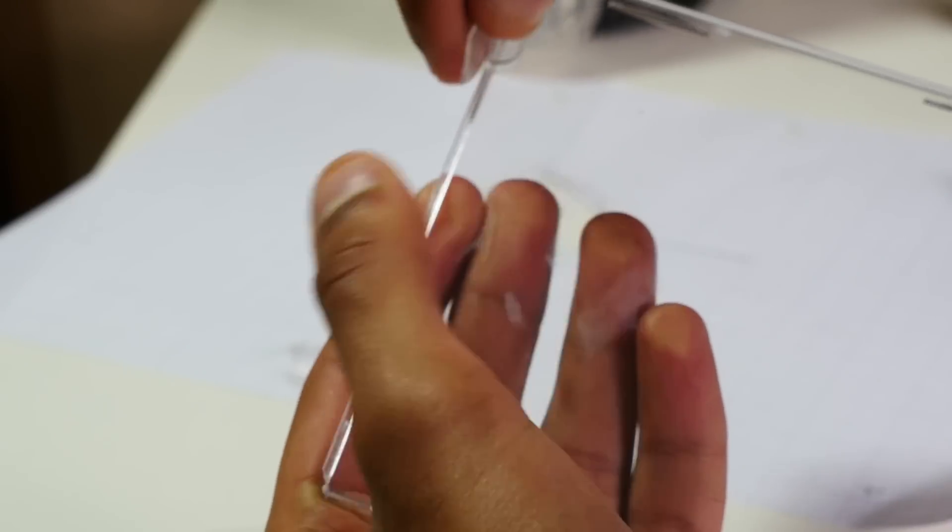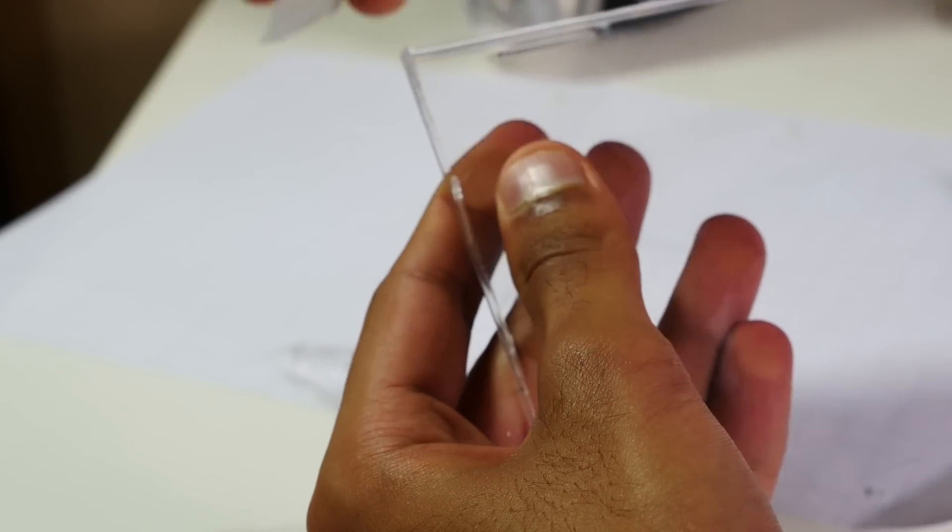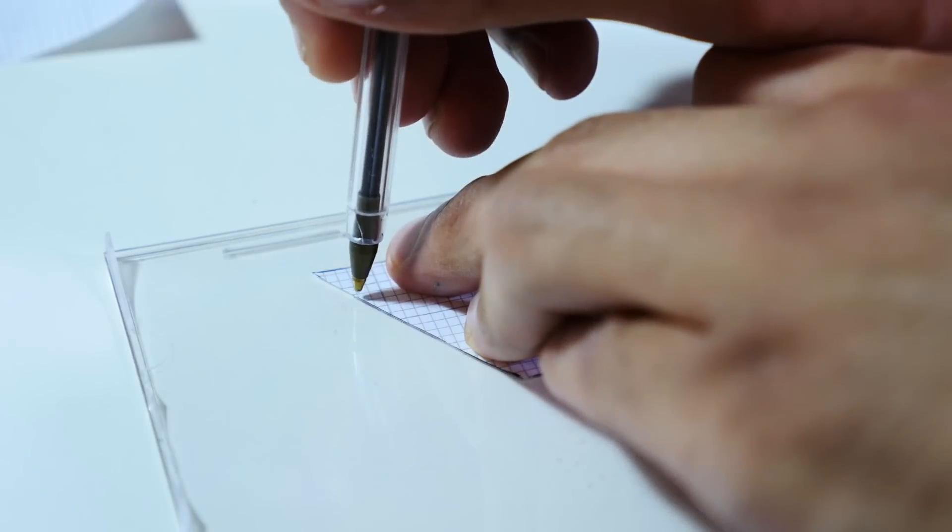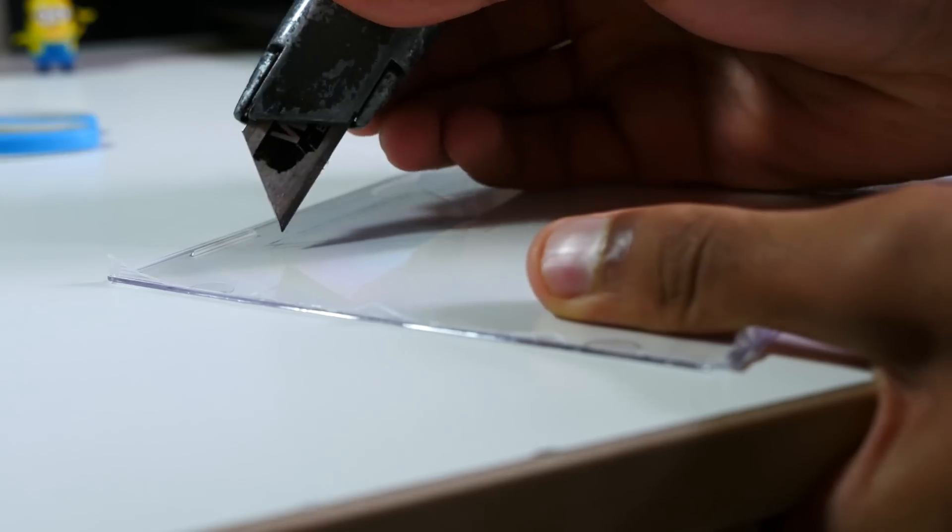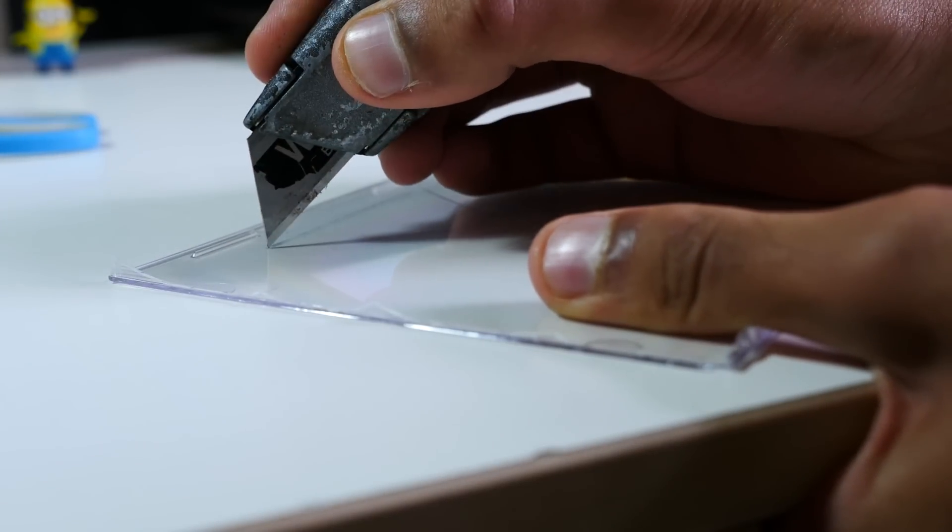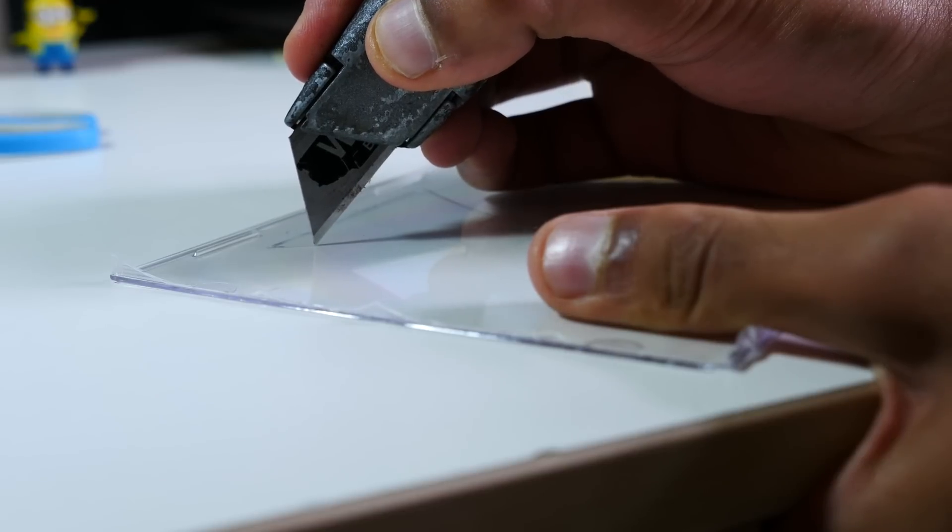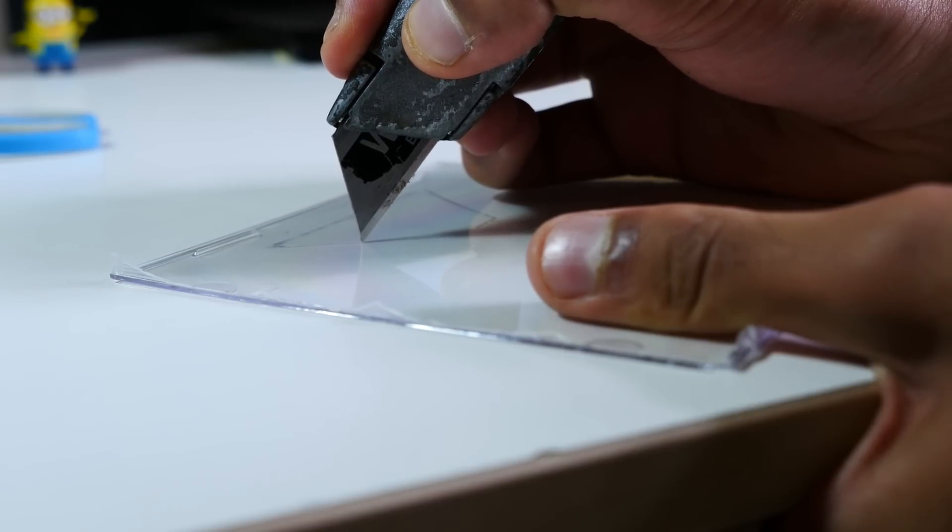So ideally this is going to be plastic. If you happen to have a glass one, it can work, but be extra careful. The higher the transparency, the better the image will come through, but it doesn't matter if it's old and dusty, as long as you give it a clean and make sure there aren't too many scratches.